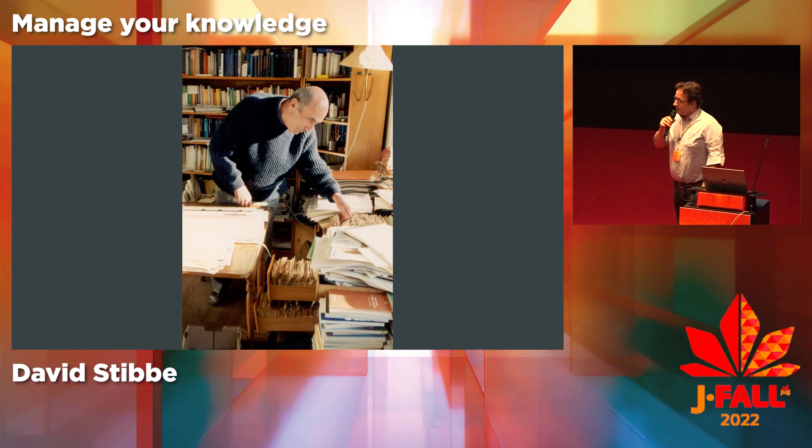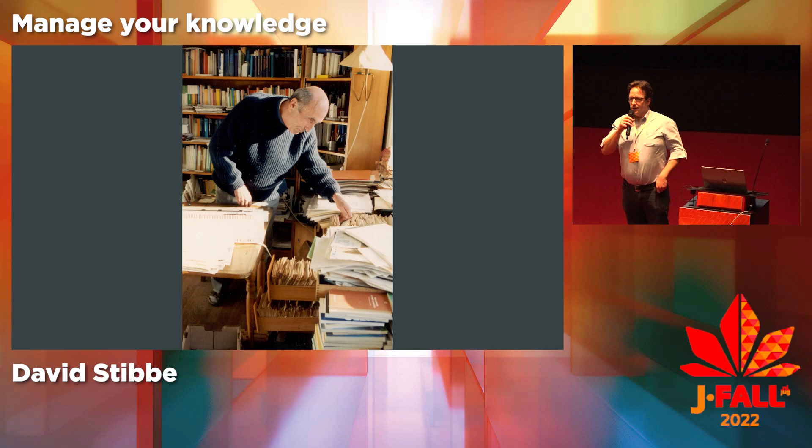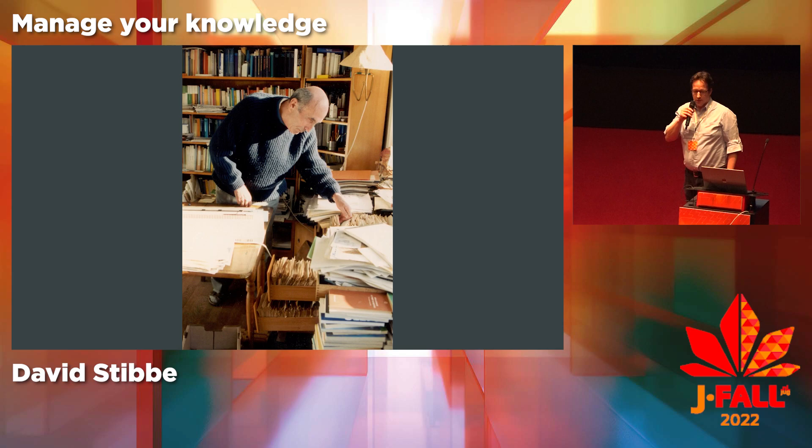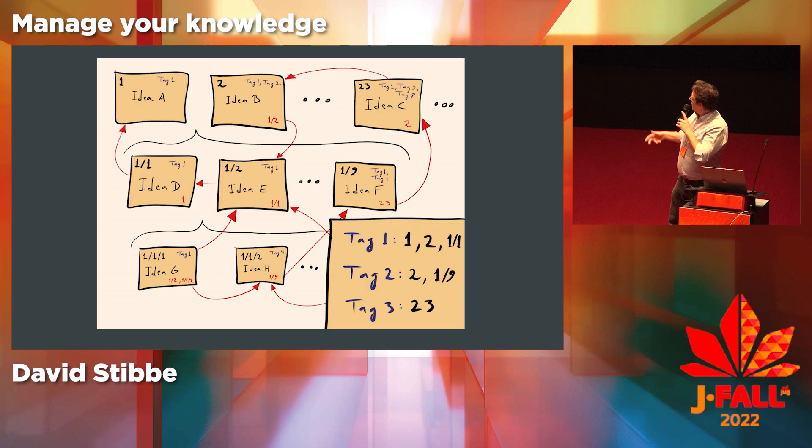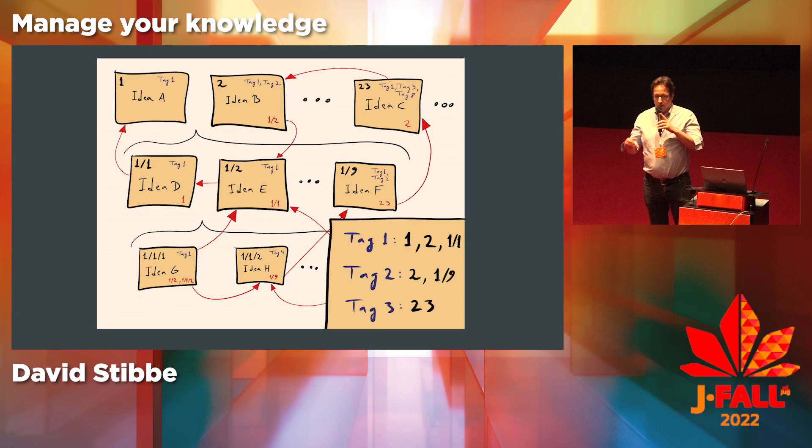This is Nicholas Luhmann, a German sociologist who was very prolific — he created around 600 papers until he died. He was able to do this by managing his knowledge with a personally created knowledge management system, which was a bunch of cabinets full of index cards that referenced each other. By doing this, he created hyperlinks on paper and was capable of finding any knowledge he wanted.